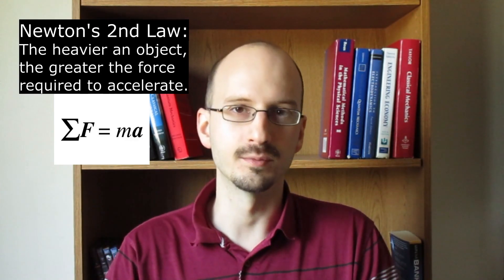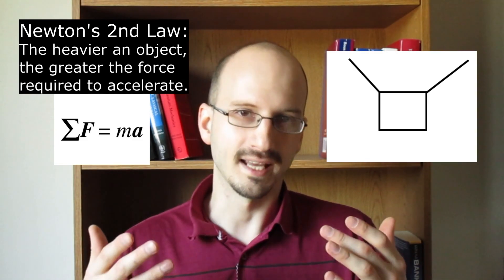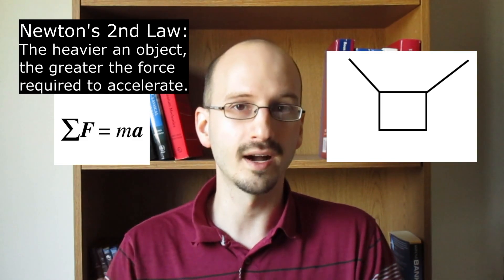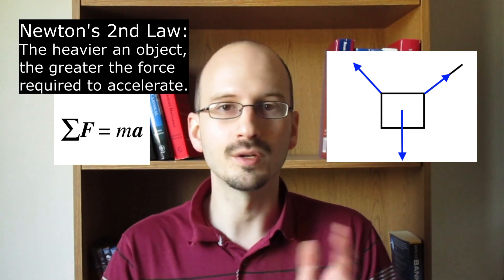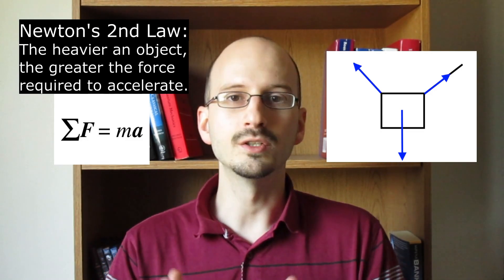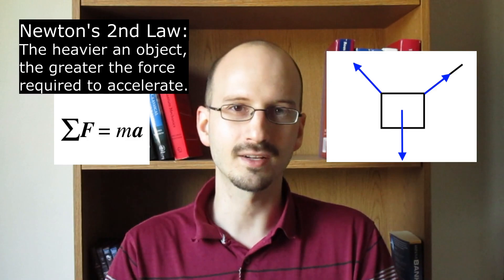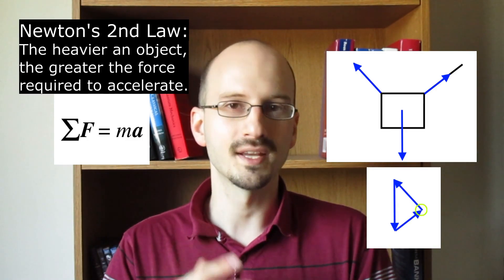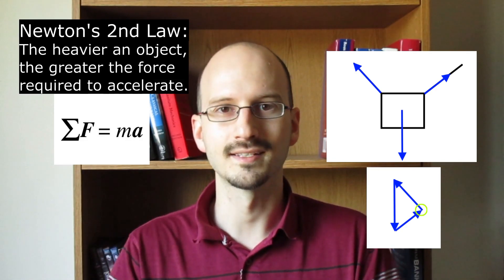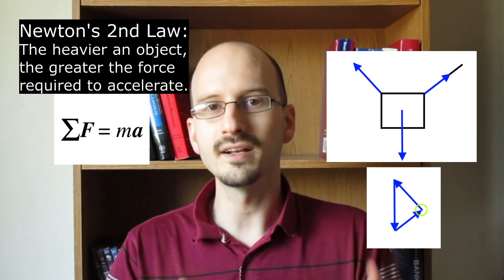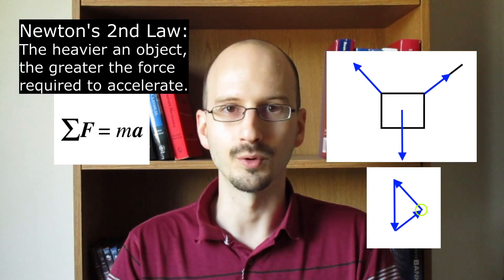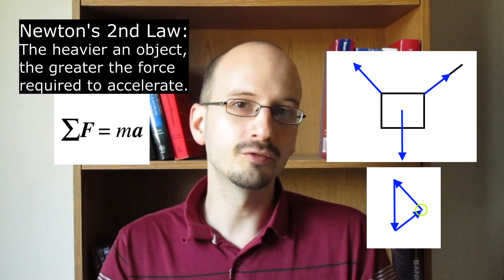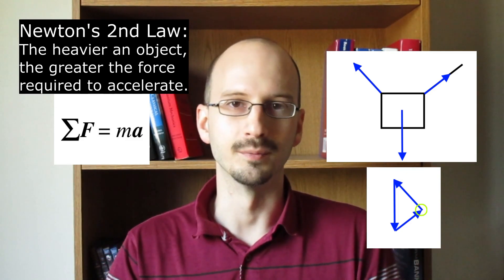The sum of the forces on an object is equal to its mass times its acceleration. The sum of the forces means you have to add all forces on the object including their directions. So if a sign is hanging by two wires, you have to add up the tension in both wires along with gravity. You do this by treating the forces as vectors, lining them up tip to tail, and drawing a final vector from the tail of the first to the tip of the last. That final vector is the net force, which tells you which direction the acceleration points in. If the object is not moving, all these vectors will add up to zero.